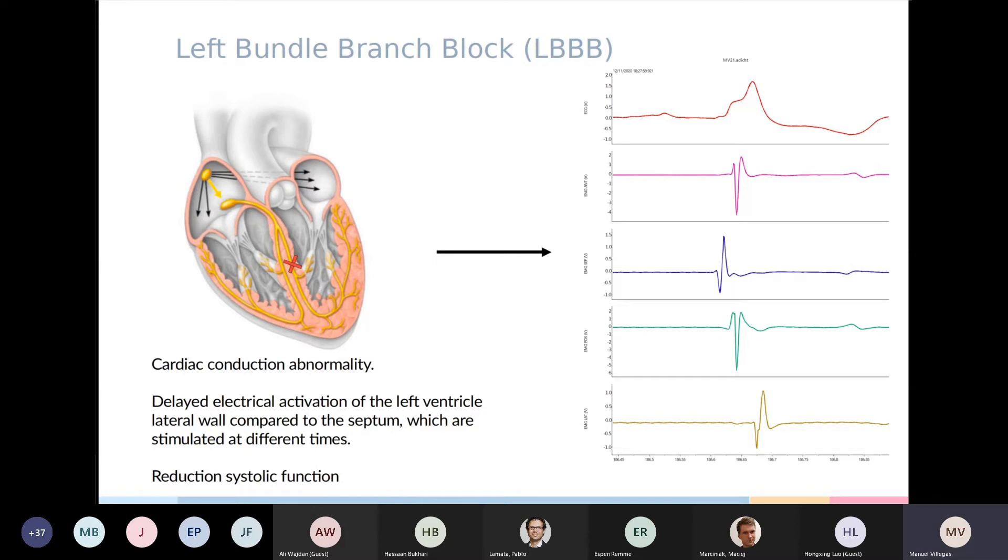Now on the right, we see again the ECG has changed. Now the QRS is quite wide, and also the electrograms are not simultaneous anymore, and we have the septal one coming first and the lateral one coming last.